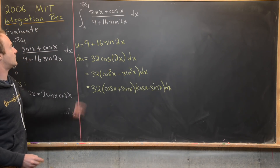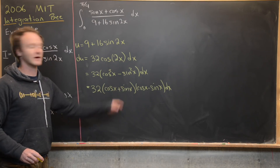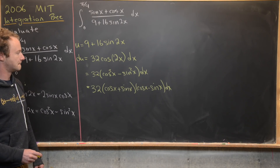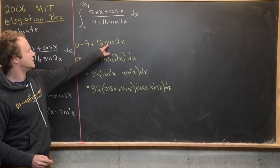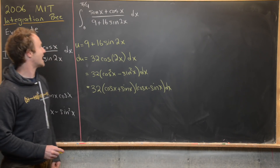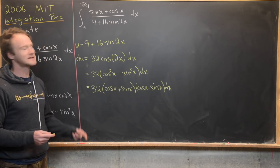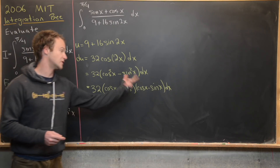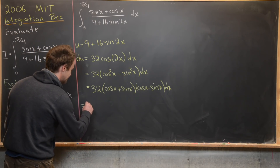Notice we've got a difference of squares, so we might as well factor that. That gives us 32 times cosine of x plus sine of x times cosine of x minus sine of x dx. That's actually pretty helpful because we've got a sine x plus cosine x in the numerator that can be matched here. So let's see, we could also write something in terms of u by squaring and taking the square root.